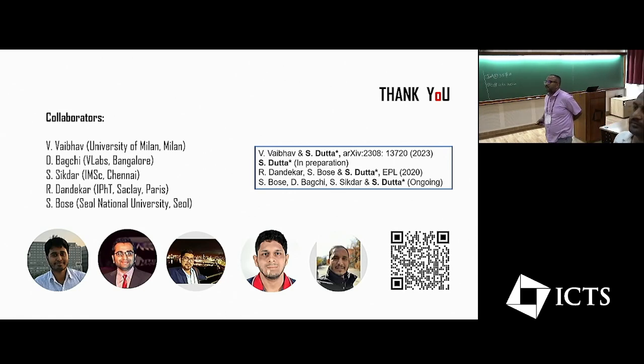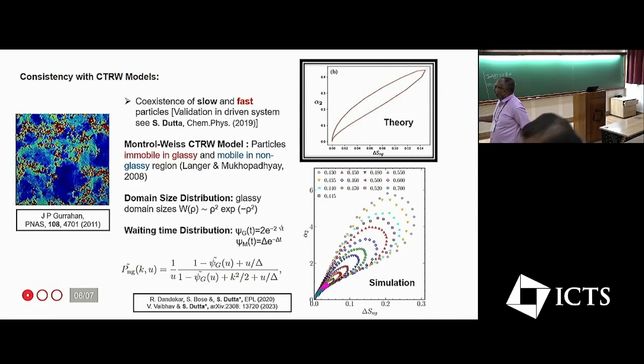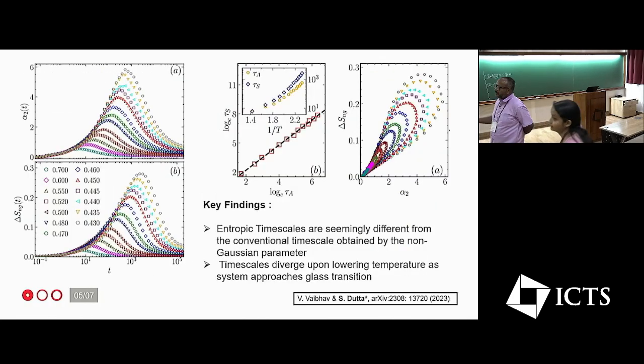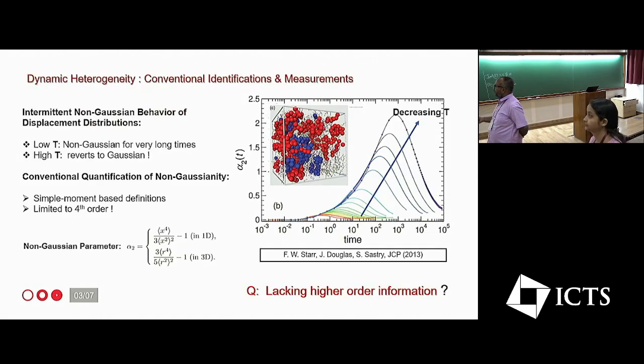Question: As opposed to some of the pictures that you are showing for dynamic heterogeneity, the corresponding length scale probably is not a diverging quantity, truly, right?